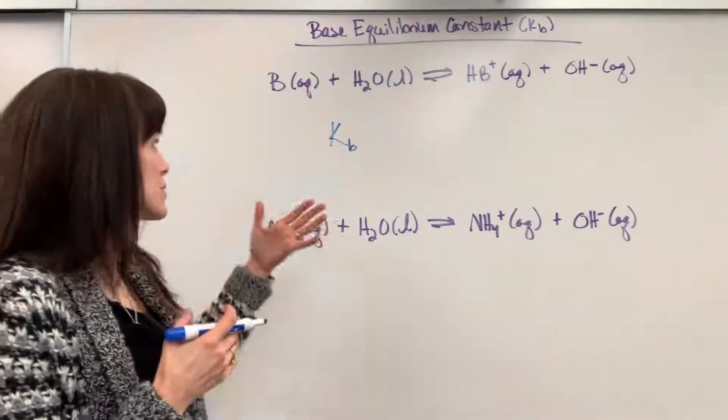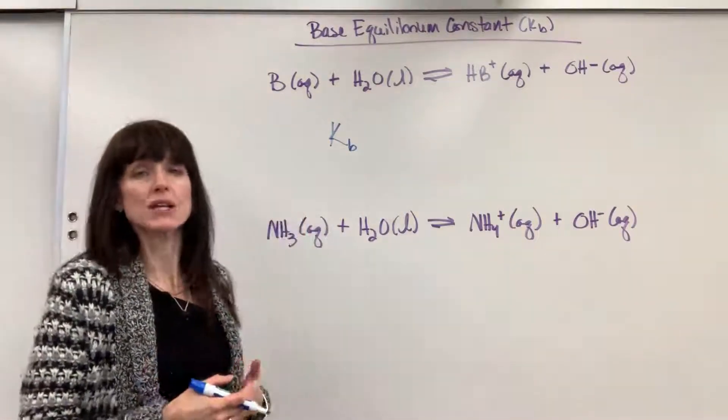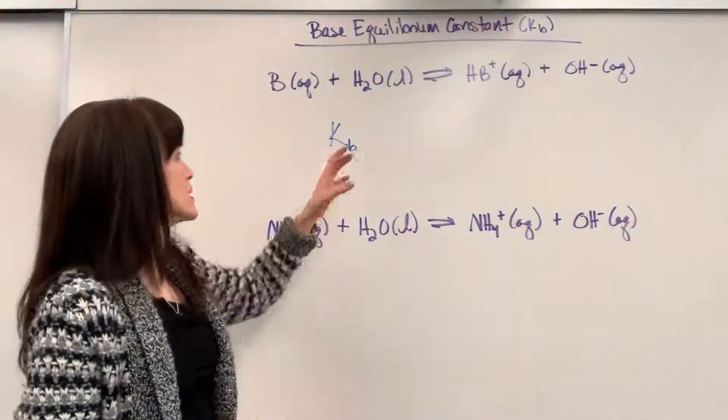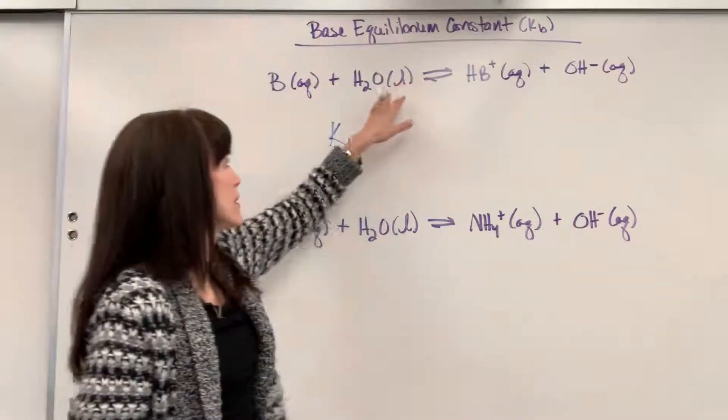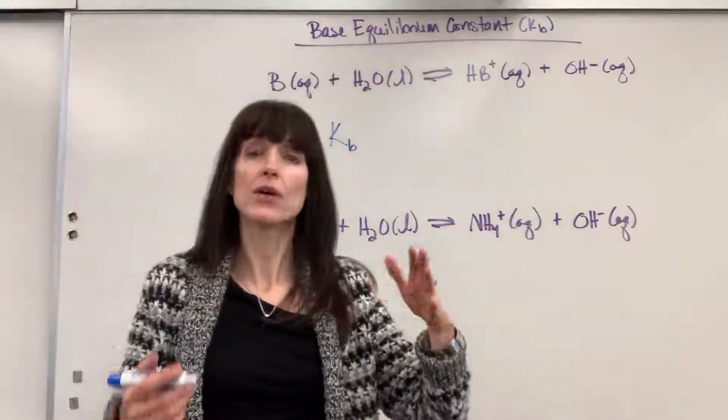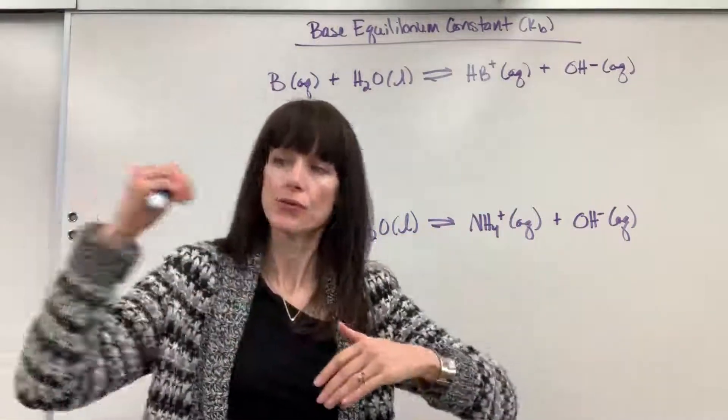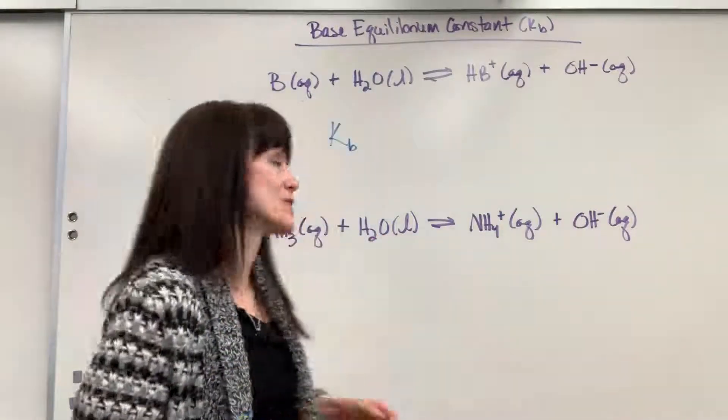and clearly telling the reader, hey, this is a base reaction. So here's the equilibrium expression for the base reaction. It's just going to be products divided by reactants. We want to know the ratio of products and reactants when we reach that equilibrium, where the forward rate equals the reverse rate.